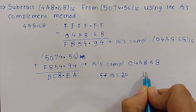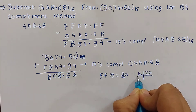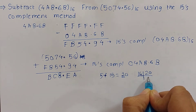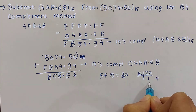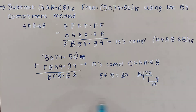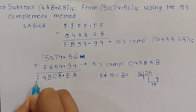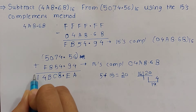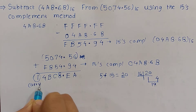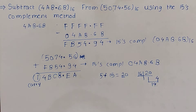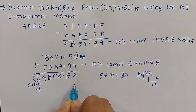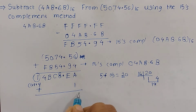We convert 20 to hexadecimal by dividing by 16: 16 goes once with remainder 4, so 20 in hexadecimal is 14. We write 4 in this position and carry 1. The carry bit is generated, which indicates the answer is positive and we add the carry — that means 1 — to the answer. So 1 plus A is B, and the remaining digits stay as they are.